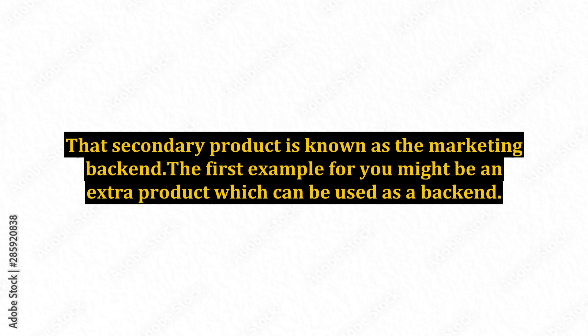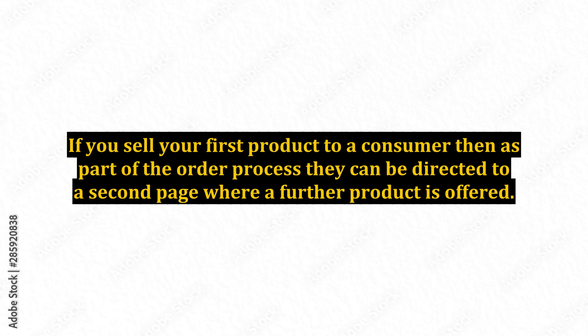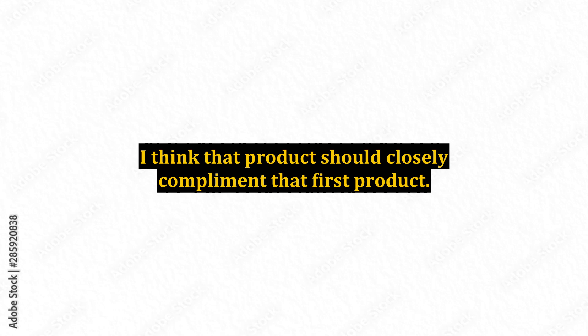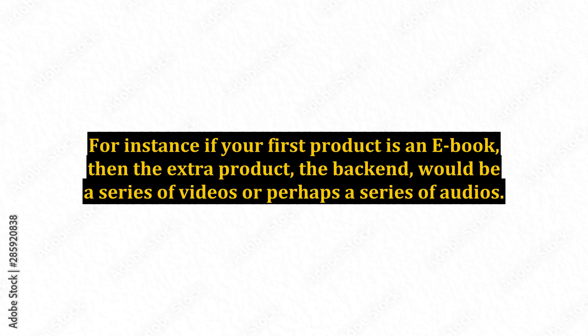The first example might be an extra product which can be used as a back-end. If you sell your first product to a consumer, then as part of the order process they can be directed to a second page where a further product is offered. That product should closely complement the first — for instance, if your first product is an e-book, then the back-end would be a series of videos or perhaps a series of audios.